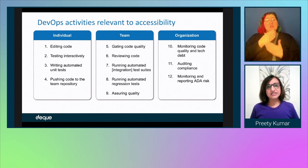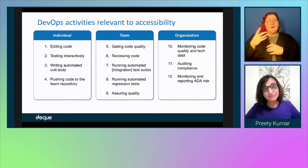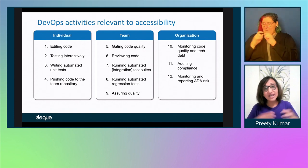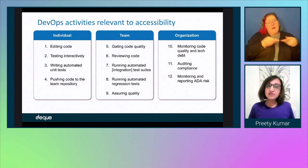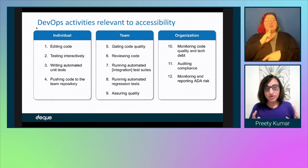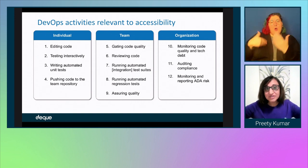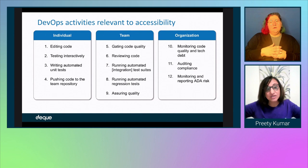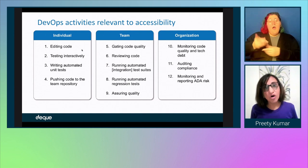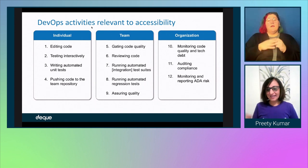The third bucket is what happens not in a single team, but across teams — across products, across websites, in an organization. That includes making sure you're monitoring what is going on across teams, whether there is accessibility technical debt that is piling on, doing an audit for compliance, and reporting on the status of ADA compliance.